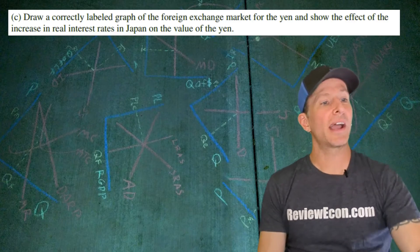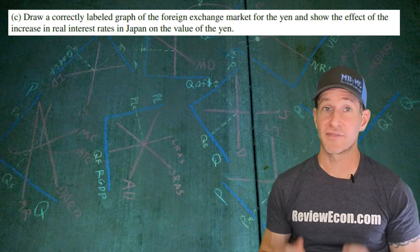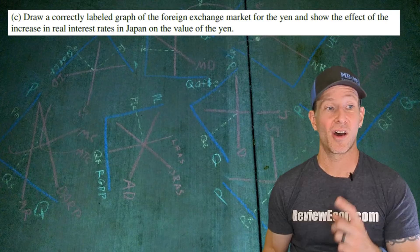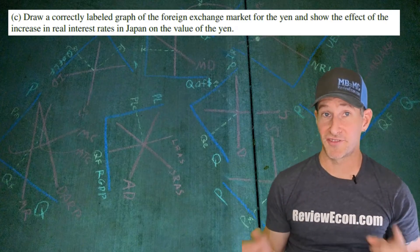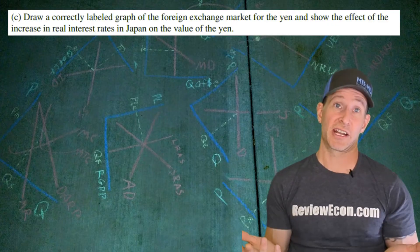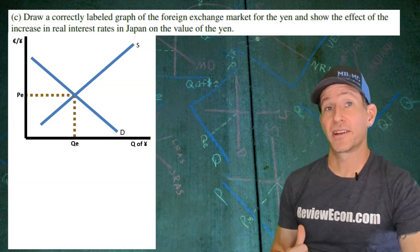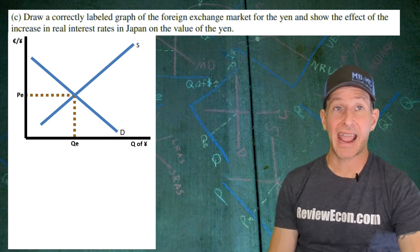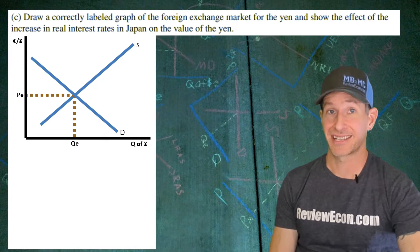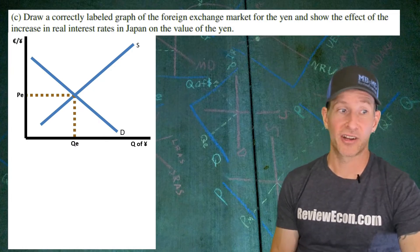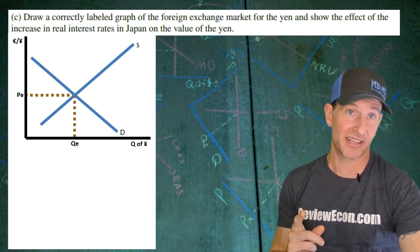For part C, we're going to draw a correctly labeled graph of the foreign exchange market for the yen and show the impact of the change in real interest rates in Japan on the value of the yen. Interest rate changes are actually a double shift. If you graph either of these shifts, you're going to get your point. But first, you need to draw out the graph before the shift. We have the quantity of yen on the x-axis and euros per yen on the y-axis. We have a downward sloping demand curve, upward sloping supply curve, and the equilibrium quantity and the exchange rate marked.